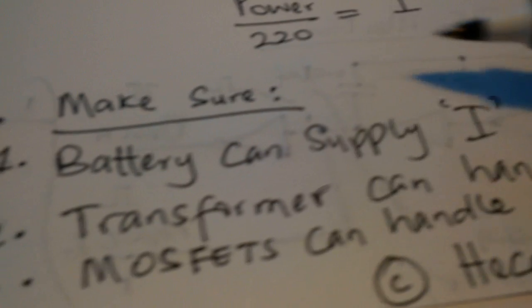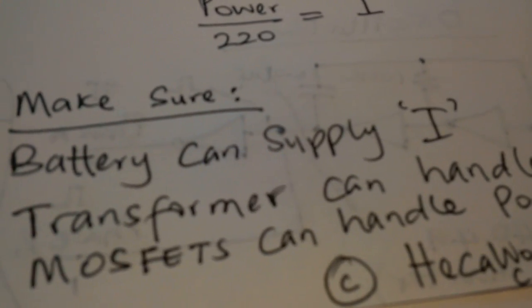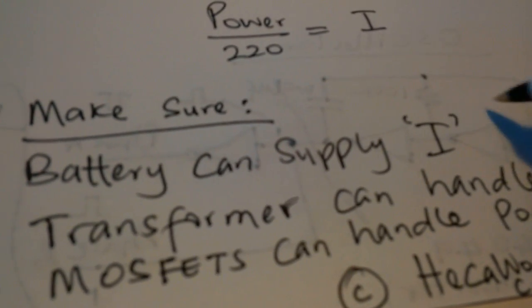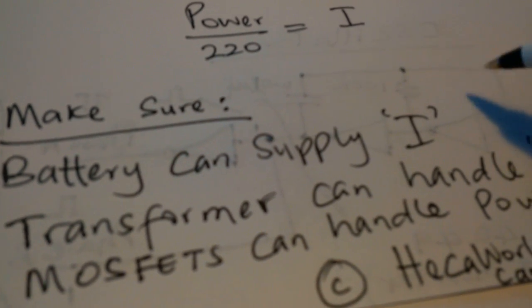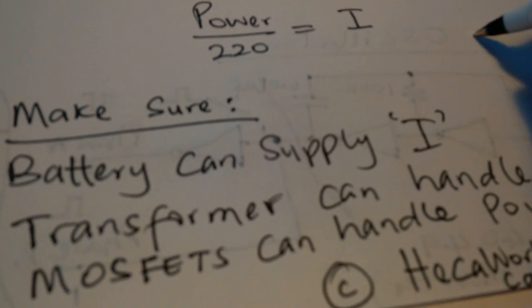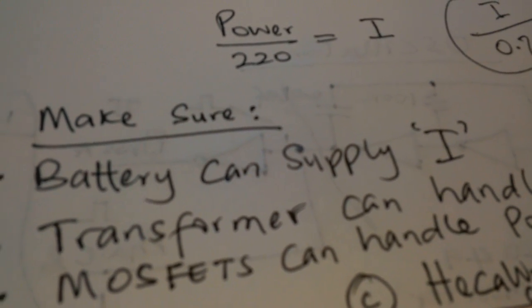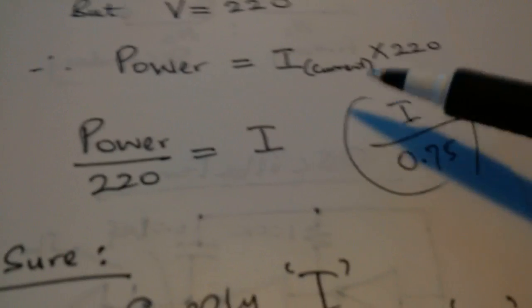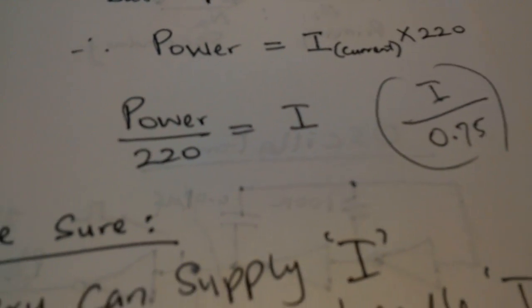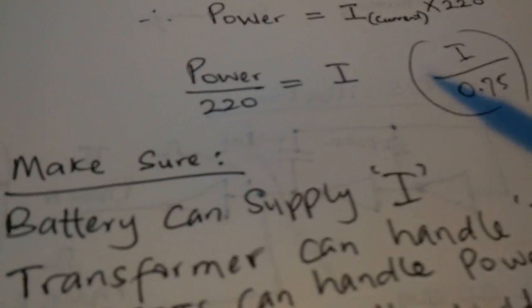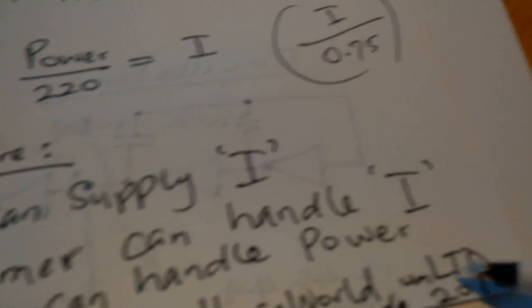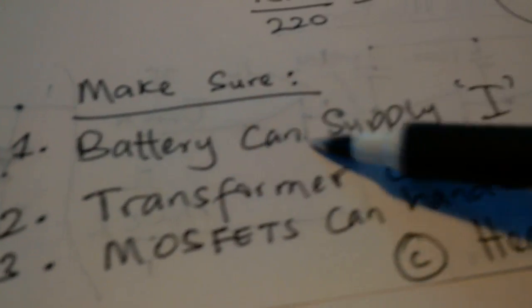So, make sure your battery can supply the current. And I would say multiply that by the divide current by efficiency. So, if your efficiency of 75%, you'll be talking about 0.75. So, the current over 0.75. So, you need something more than 0.75. And then, you need something more than I, sorry. And then, you make sure that your transformer can handle the current. You make sure that your MOSFETs can also handle your power. And that is it pretty much.